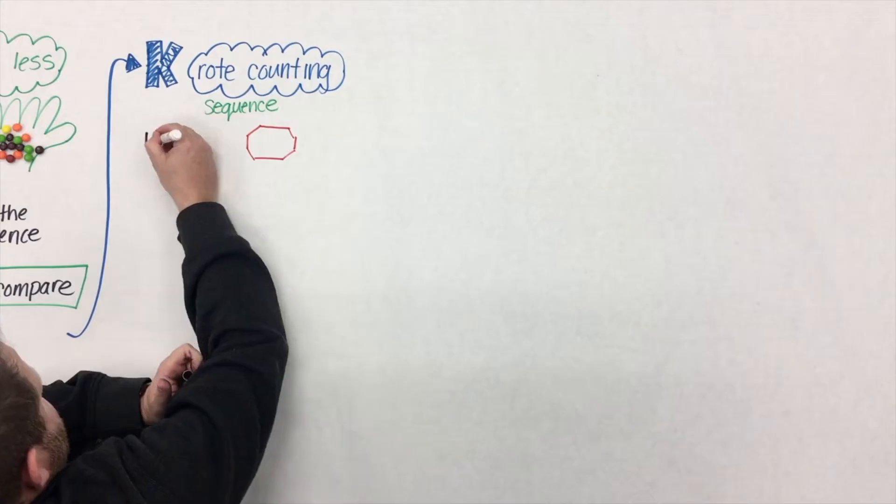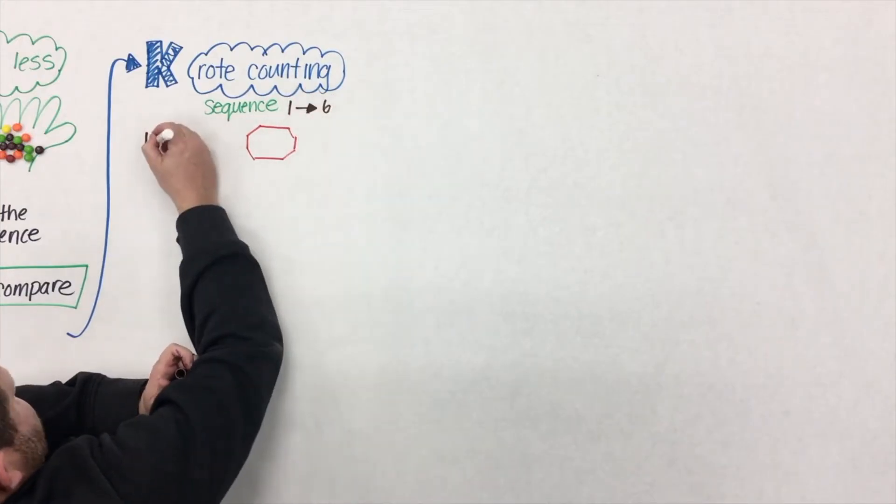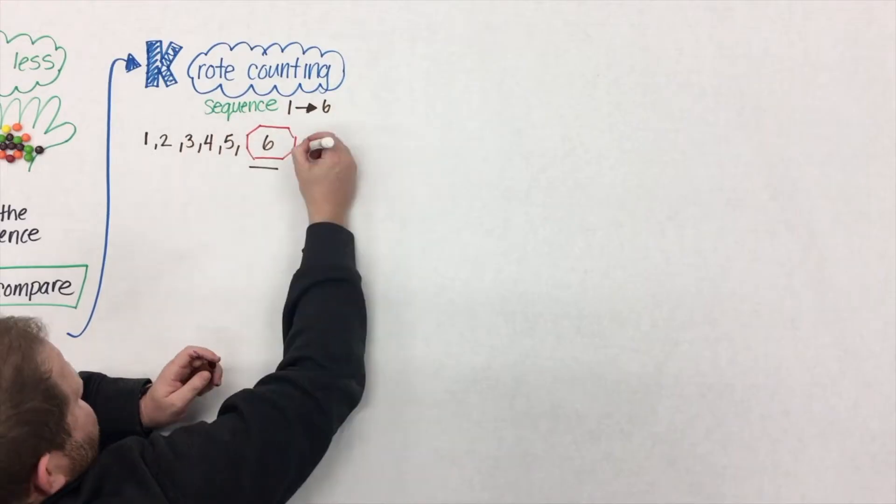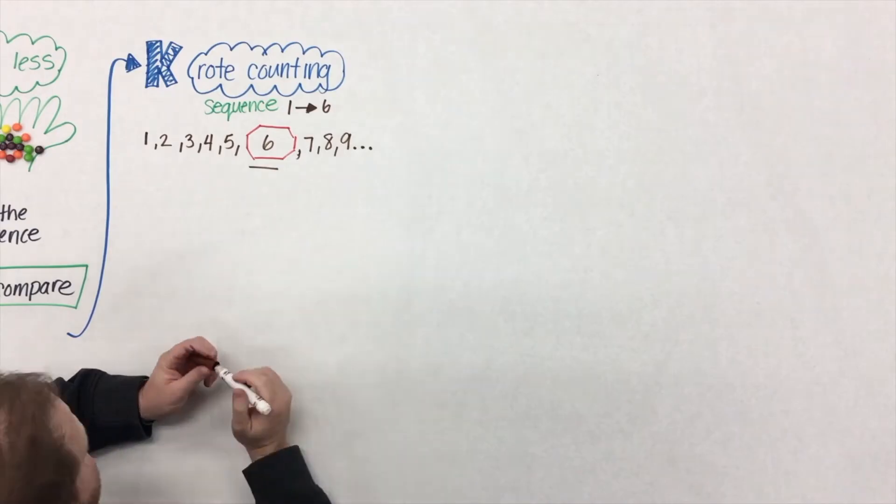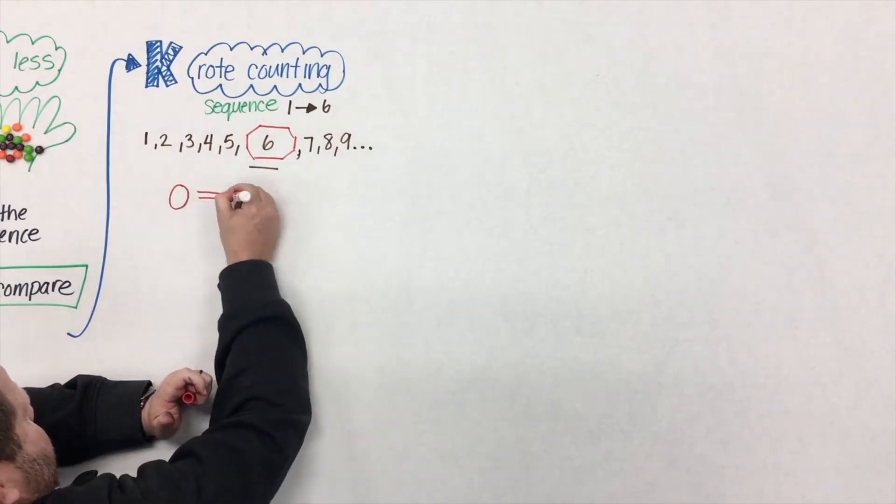So an example of that would be as if we asked a student to count from one to six. They might say 1, 2, 3, 4, 5, 6, 7, 8, 9, 10. We said stop at six. But you know what? They can't. They have no idea where six is in that count sequence.